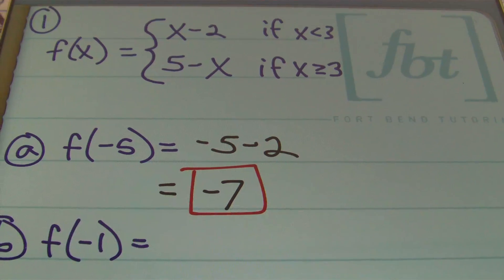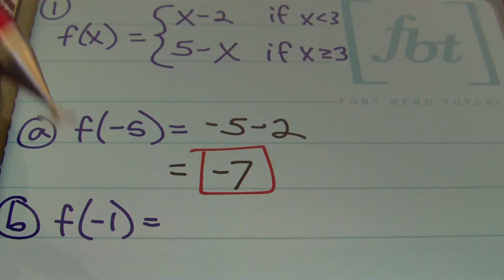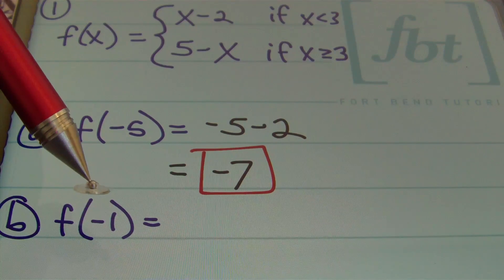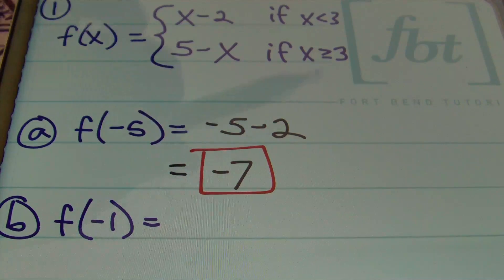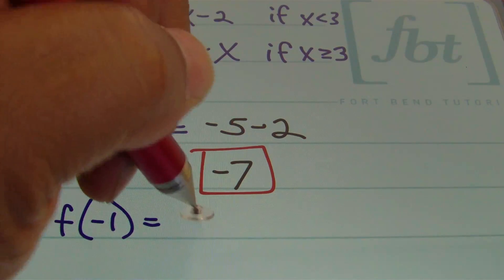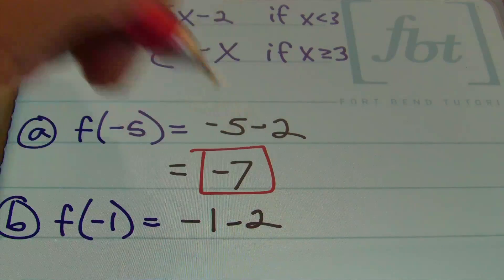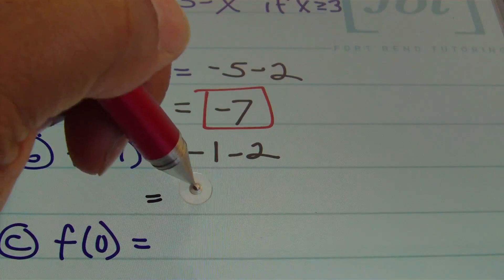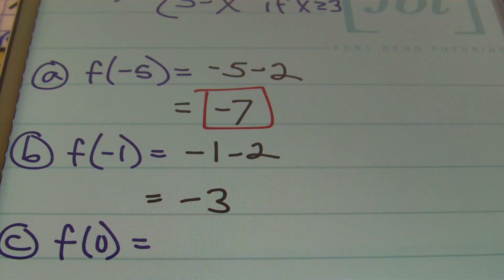For part b, find f of negative one, meaning the y value when x is negative one. Negative one is less than three, so we use x minus two again. Replacing x with negative one gives negative one minus two, which simplifies to negative three.